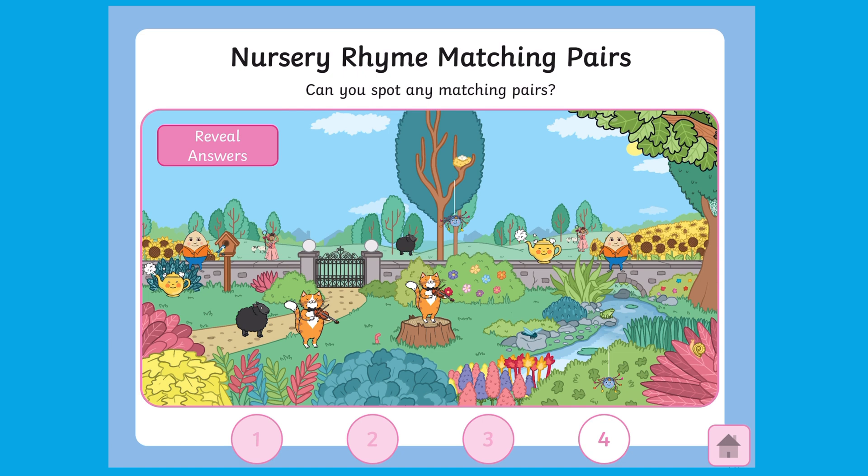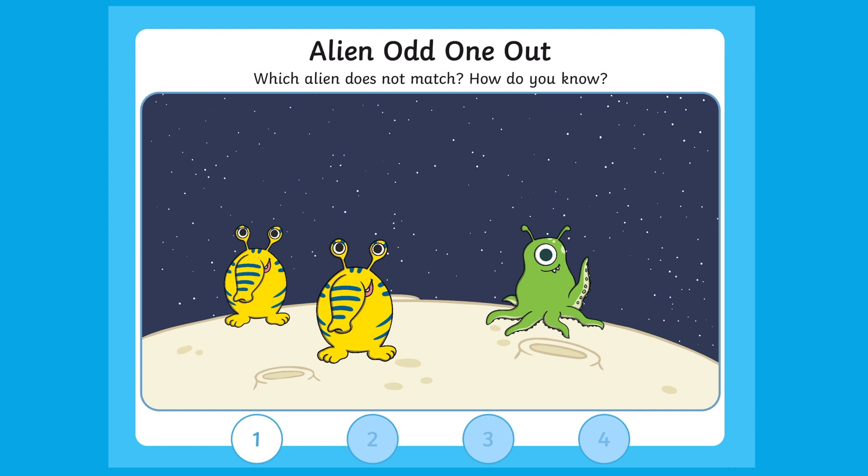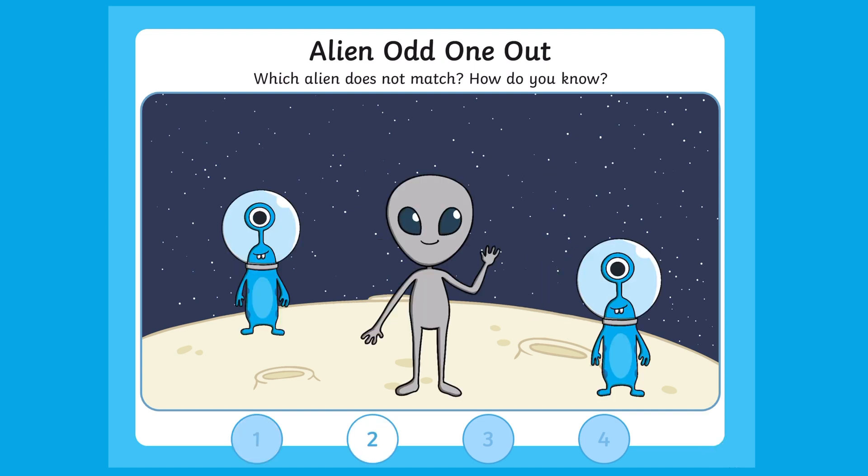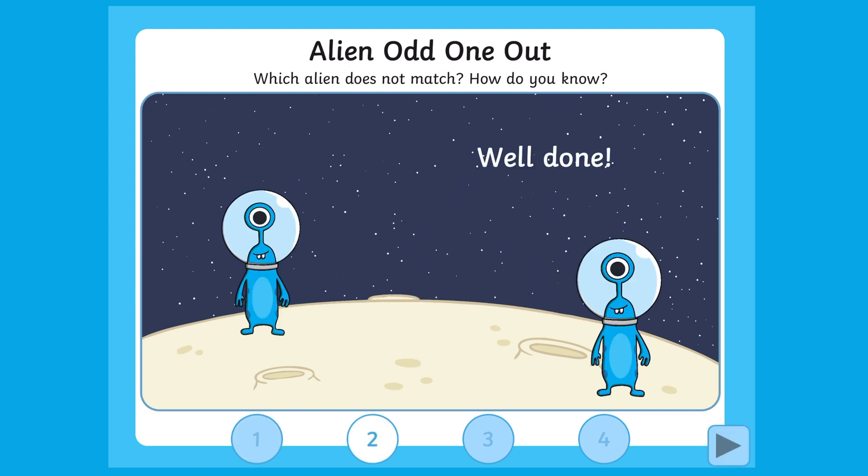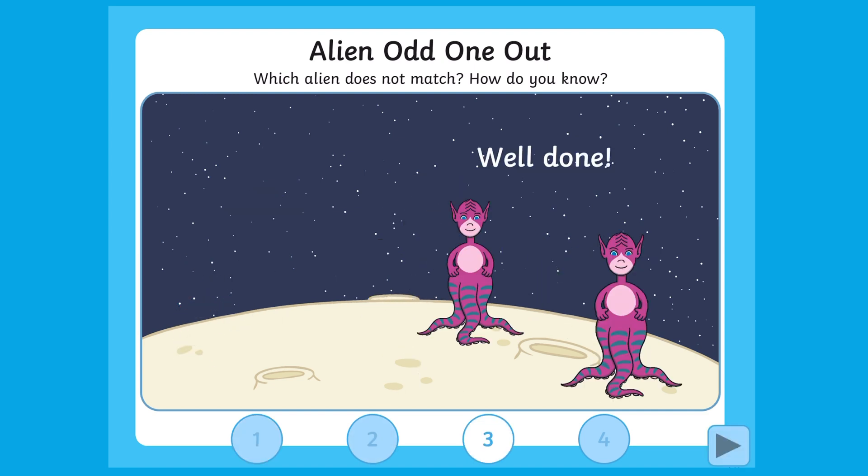Can they find all the matching pairs in this picture? In the final game children must find the odd one out alien.